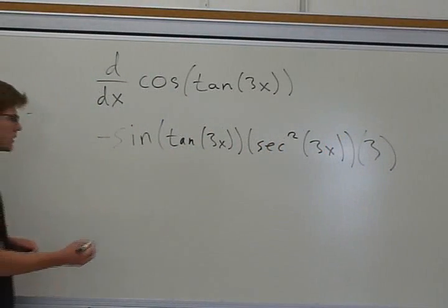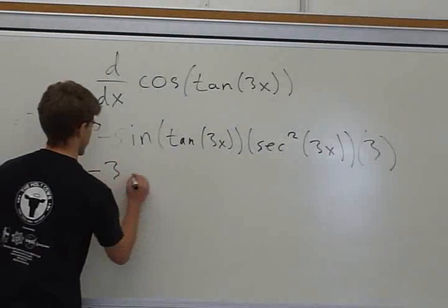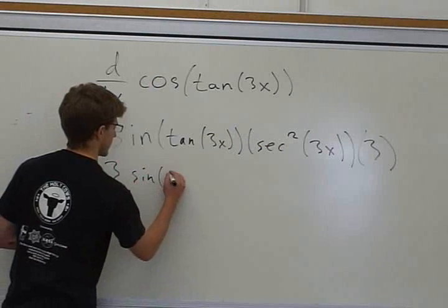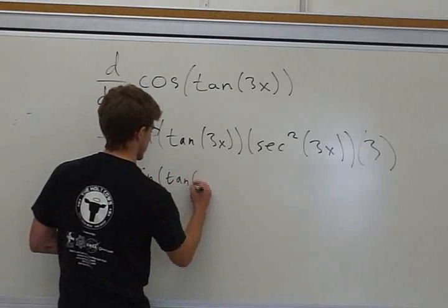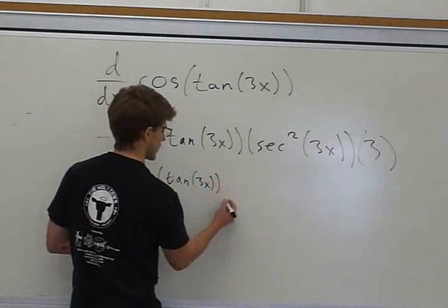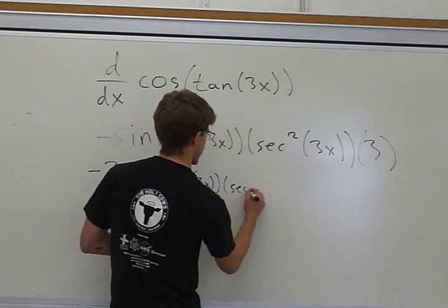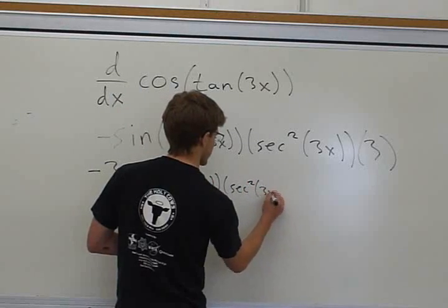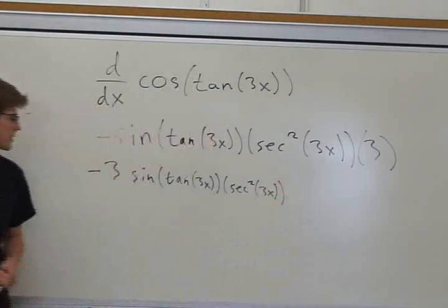And if you want to rewrite it, negative 3 sine of the tangent of 3x times secant squared 3x. And that's the answer.